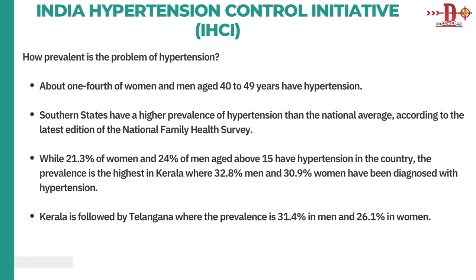How prevalent is hypertension in India? One-fourth of women and men aged 40 to 49 years have hypertension. Southern states have higher hypertension prevalence than the national average, according to the latest National Family Health Survey. Overall, 21.3% of women and 24% of men above the age of 15 have hypertension in our country. The prevalence is highest in Kerala, where the rate for men is 32.8% and for women 30.9%, followed by Telangana at 31% for men and 26.1% for women.